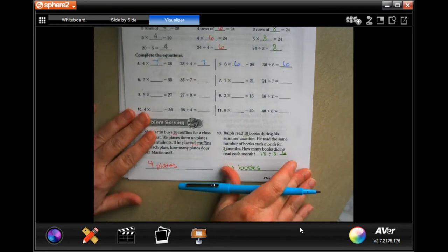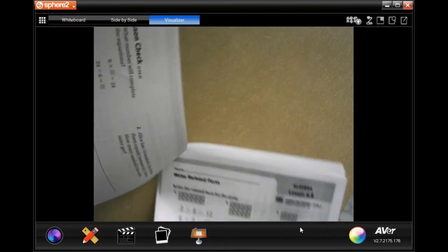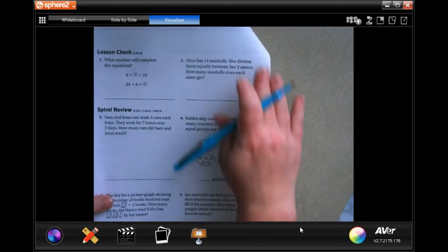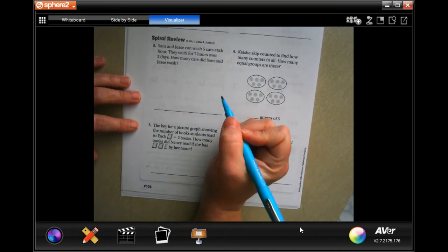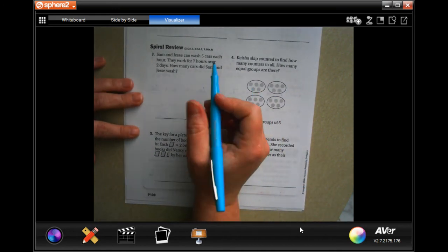I'm going to turn it over to the back side where you guys are going to do the lesson check. I'm going to do this spiral review with you. Sam and Jesse wash five cars each hour.